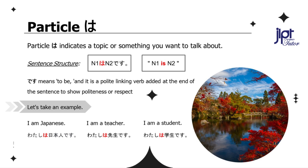Desu means 'to be,' and it's a polite linking verb added at the end of the sentence to show politeness or respect towards the person we met for the first time or someone who is elderly and respectable. So make sure to use desu at the end of every sentence. Let's take an example: I am Japanese. Watashi wa nihonjin desu.